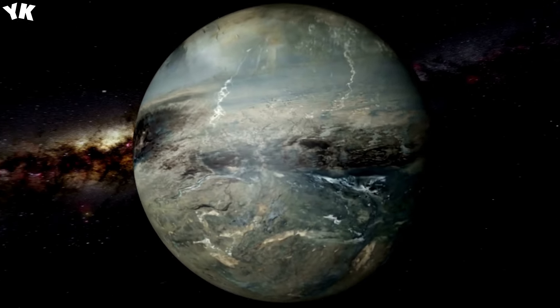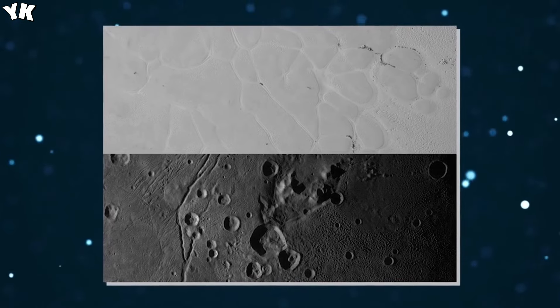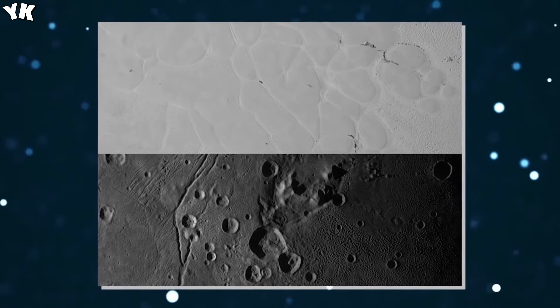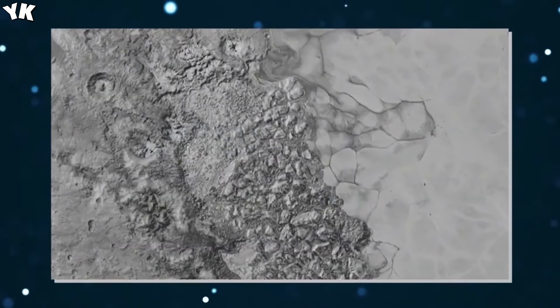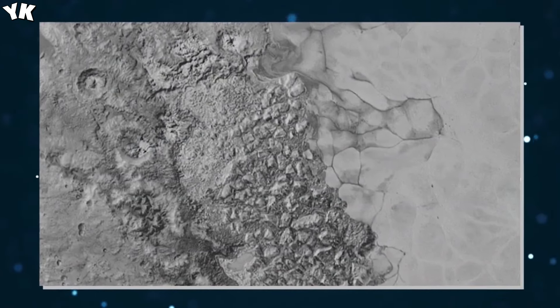Nevertheless, Pluto boasts several geological oddities, notably a multitude of cracks discovered on its far side, supporting the notion of a hidden ocean and offering insights into its formation.